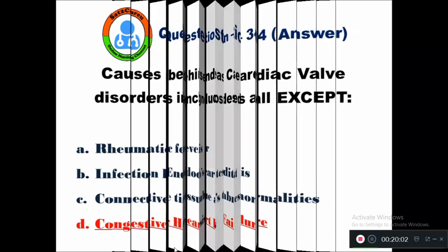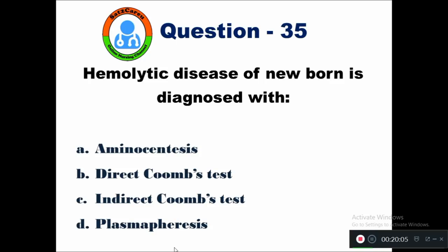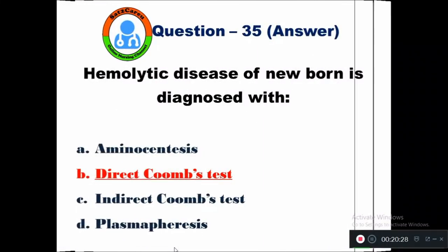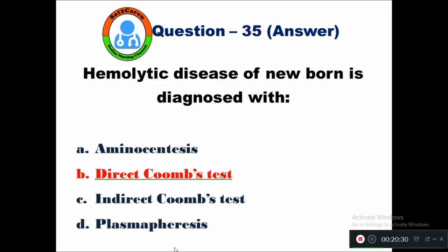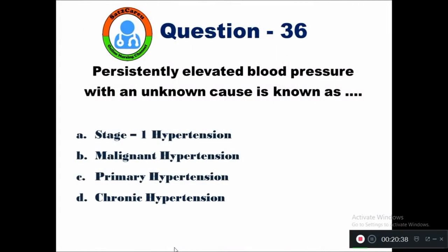Question 35: Hemolytic disease of the newborn is diagnosed with — option A amniocentesis, B direct Coombs test, C indirect Coombs test, D plasmapheresis. The right answer is the direct Coombs test, which is used to diagnose hemolytic disease in a newborn baby.